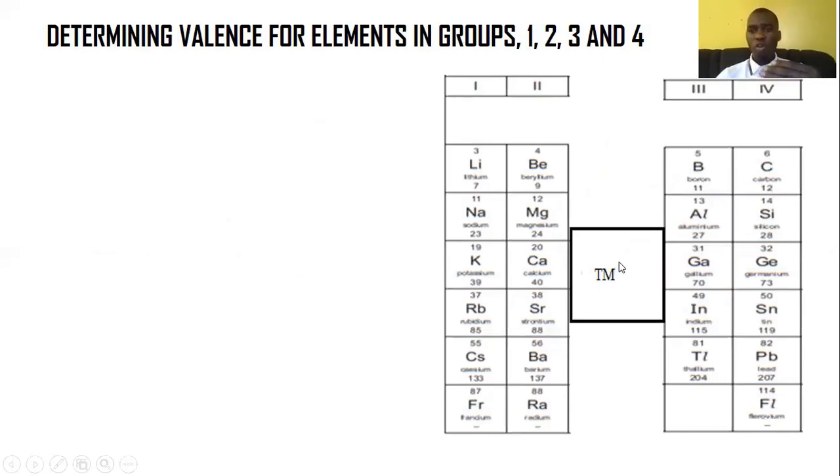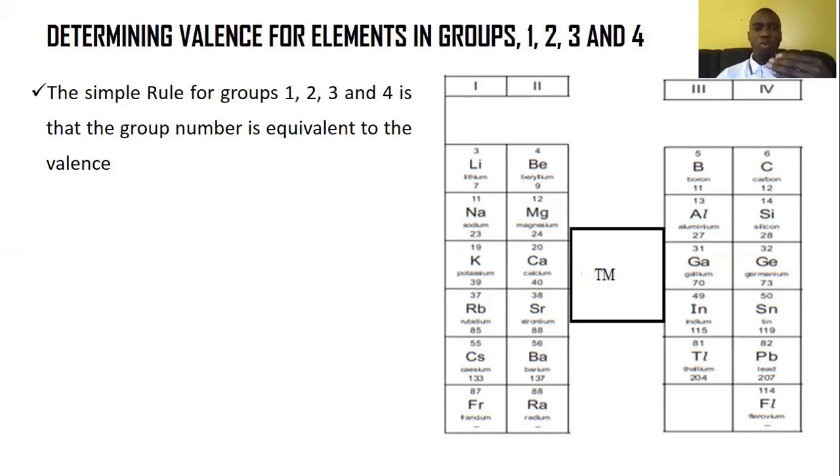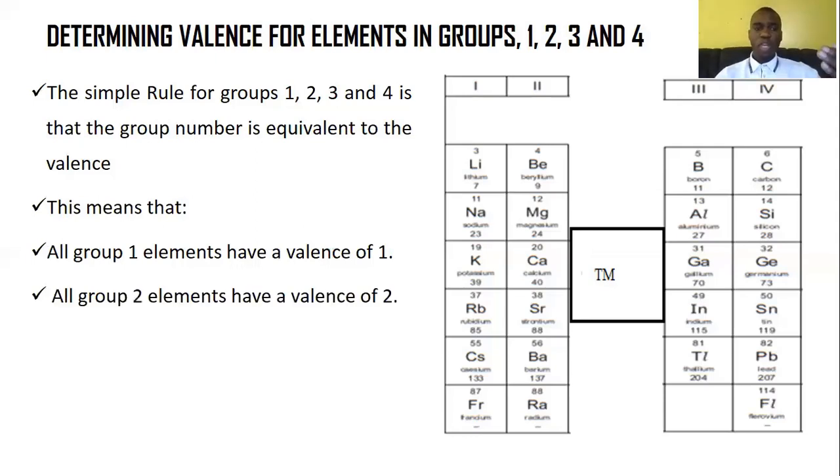Like I mentioned, it's known as transition metals or transition elements. Now, let's look at the rule. How do we find the valence in these groups? So the rule is very simple. For groups one, two, three, and four, the rule is that the group number is equivalent to the valence. Now, what does this mean? So if we say, for example, this is group one. So all the elements in here, they've got a valence of one. That's what it means. So all group one elements have got a valence of one. Now, all group two elements have got a valence of two. All group three elements have got a valence of three. And all group four elements have got a valence of what? Four.